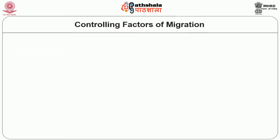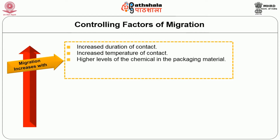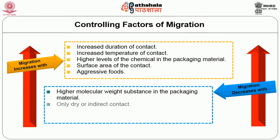Let us now look at the controlling factors of migration. Migration increases with increased duration of contact, increased temperature of contact, higher levels of chemicals in the packaging material, surface area of contact, and aggressive foods. Migration decreases with high molecular weight substances in the packaging material, only dry or indirect contact, low diffusivity packaging material, and presence of a barrier layer.